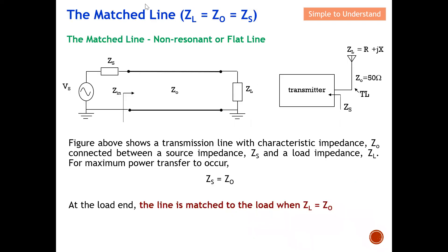Let's jump straight into what is a match condition. Under a match condition, we need to fulfill this condition: ZL is equal to Z0, and also equals to ZS. The figure above shows a transmission line — this thicker solid line is basically a transmission line with characteristic impedance Z-naught. The transmission line is connected between a source impedance on one side.